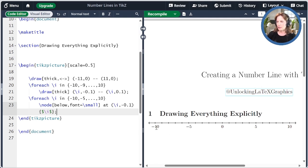And then we're going to put our nodes below with a small font at the position I minus 0.1, and that's the lower end of the tick mark. I've added a link to the episode on nodes in the show notes.